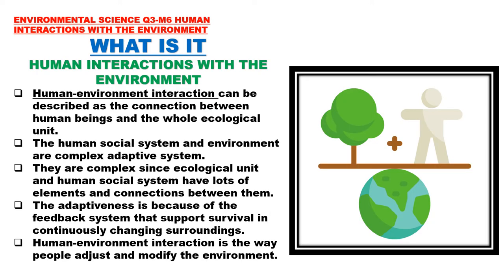Let us now start our discussion about human interactions with the environment. Human-environment interaction can be described as the connection between human beings and the whole ecological unit. The human social system and environment are complex adaptive systems — complex since they have lots of elements and connections, and adaptive because of the feedback system that supports survival in continuously changing surroundings. Simply put, human-environment interaction is the way people adjust and modify the environment.